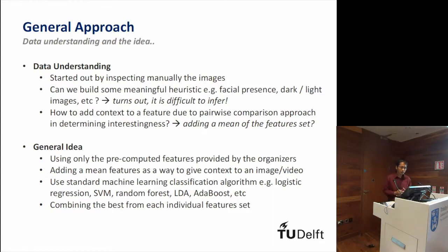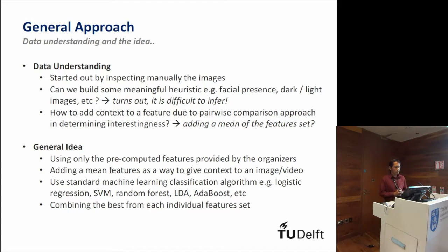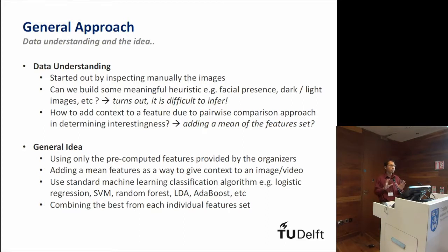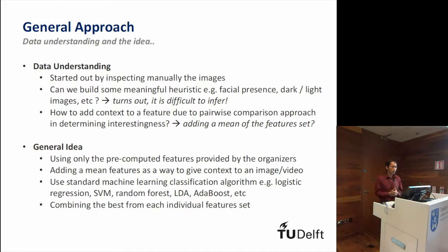We started with data understanding because we were intrigued by last year's best result, which was based on a heuristic rule capturing facial presence in an image or video. However, it turns out it is difficult to infer from this year's dataset. We tried to find whether dark images would generate low interestingness, but what if most of the images in a movie are dark? So it's also difficult to create such heuristics. We also thought about adding context to the features due to the pairwise comparison approach in determining interestingness.